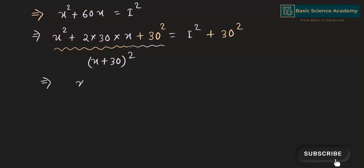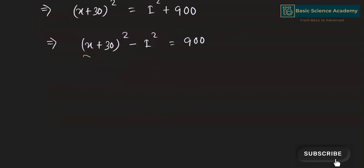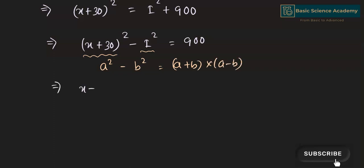This gives (x + 30)² = i² + 900, which we can rewrite as (x + 30)² − i² = 900. The left side is in the form a² − b² = (a + b)(a − b), giving (x + 30 + i)(x + 30 − i) = 900.